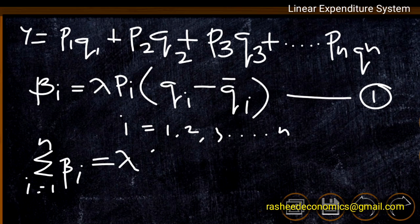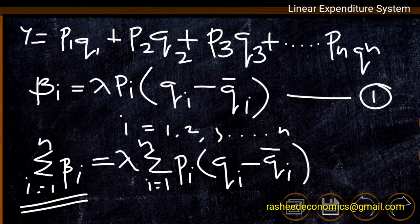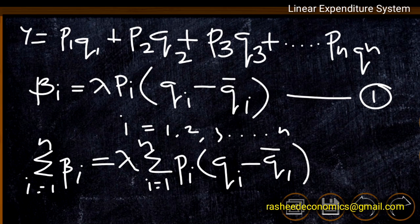Sigma beta_i equals lambda times sigma of pi*(qi - qi_dash). This sigma beta_i term shows the total propensity to consume across all groups 1 to n — the entire propensity to consume for all commodities, equal to the sum of changes in quantities consumed by each group. It is assumed that total income is fully spent on different groups of commodities, so sigma beta_i (i = 1 to n) equals 1.